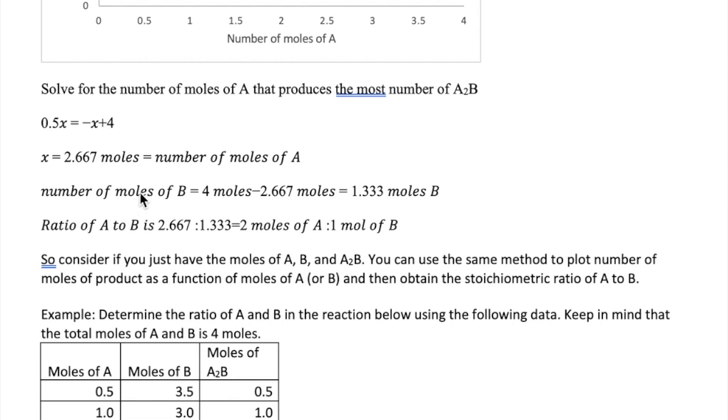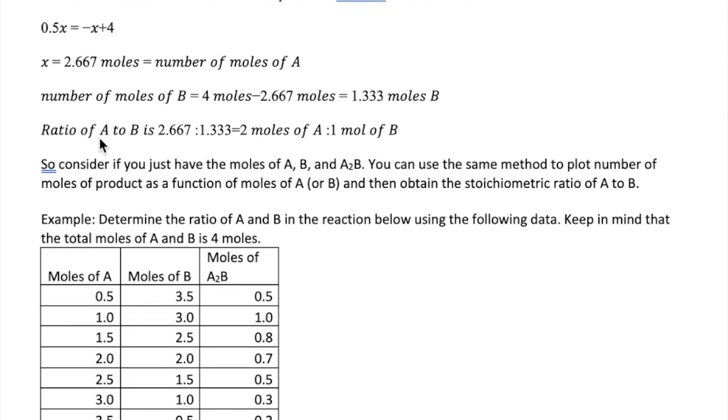Now that we find that 2.667 moles of A produce the most product, we can also use that information to find the number of moles of B, which is just 4 moles minus 2.667, giving us 1.333 moles of B. So now we can reduce the ratio of A to B, which is 2.667 to 1.333, and that reduces exactly down to 2 to 1, which is the correct ratio for our reaction in this case.